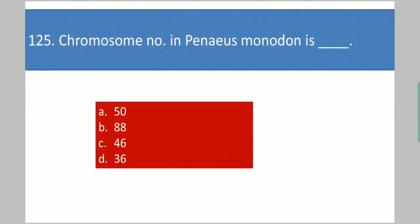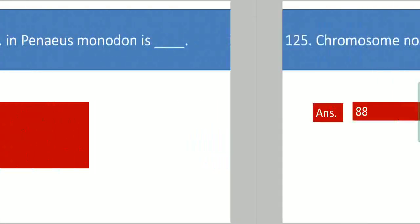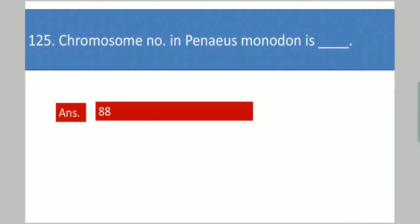Next question: Chromosome number in Penaeus monodon is dash. Your options are: 50, 88, 46, 36. Your answer is 88.